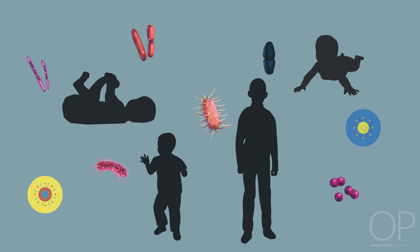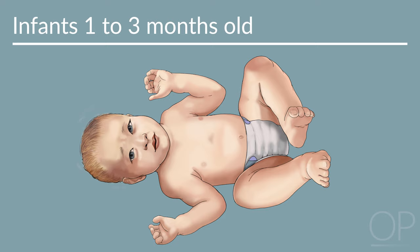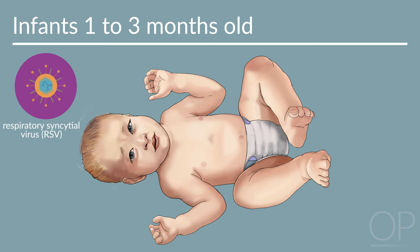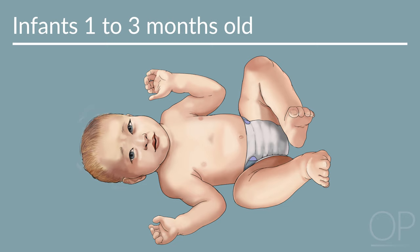There are many pathogens that can cause pneumonia. The most common offending organisms in otherwise healthy children may be broken down by the ages in which they are frequently seen. Among neonates less than 1 month old, infection is typically acquired from aspiration of infected amniotic fluid, so the most common causes include group B streptococci and E. coli. Among infants 1 to 3 months of age, viral pathogens such as respiratory syncytial virus (RSV), human metapneumovirus, influenza, and parainfluenza are the most common causes of pneumonia.